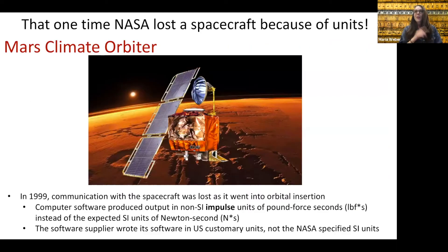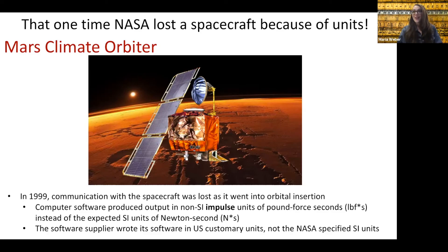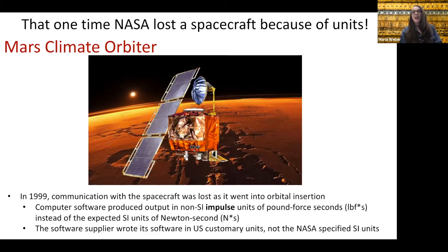Now I'm going to talk about that one time when NASA lost a spacecraft because of units. That spacecraft was called the Mars Climate Orbiter. In 1999, communication with the spacecraft was lost as it went into orbit around Mars. The computer software produced output in non-SI impulse units — a unit called the pound-force second — but what was expected was the SI unit for impulse, which is a Newton second. We're going to talk about impulse later this semester.